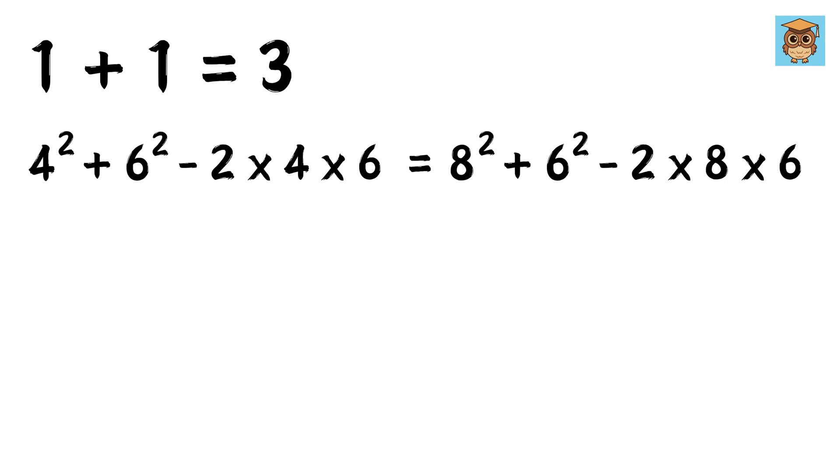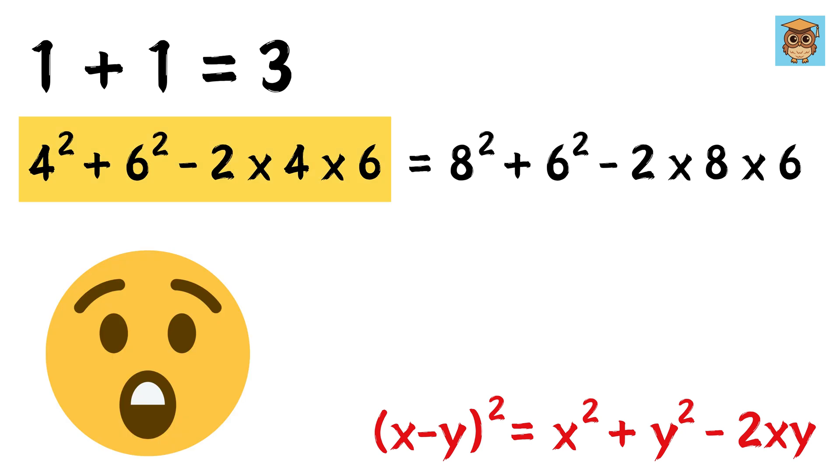Now I think we all have learnt this famous formula in our school. Oh, look here! On the left-hand side we have x as 4 and y as 6, so this thing will become 4 minus 6 whole square, right? Awesome!